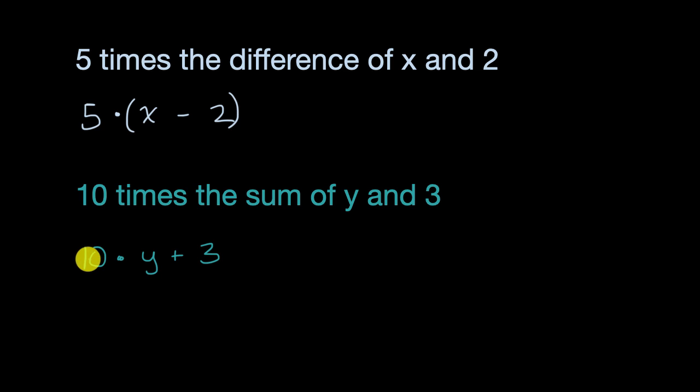Someone would interpret this as, hey, maybe I should multiply 10 and y first, because that's what order of operations would tell me to do. But that's not what we want. We want 10 times, not just y, but the sum of y and three. So that's where the parentheses are really important to make sure that we take the sum of y and three first, and then multiply that by 10.